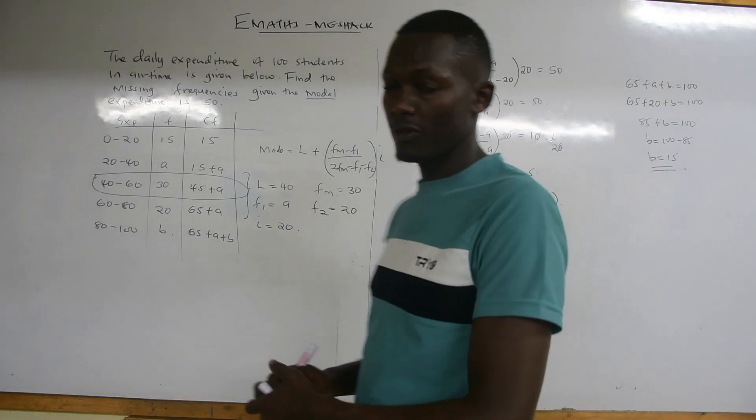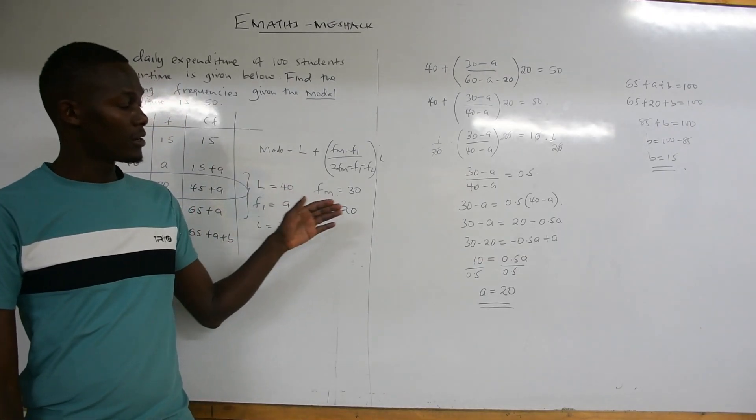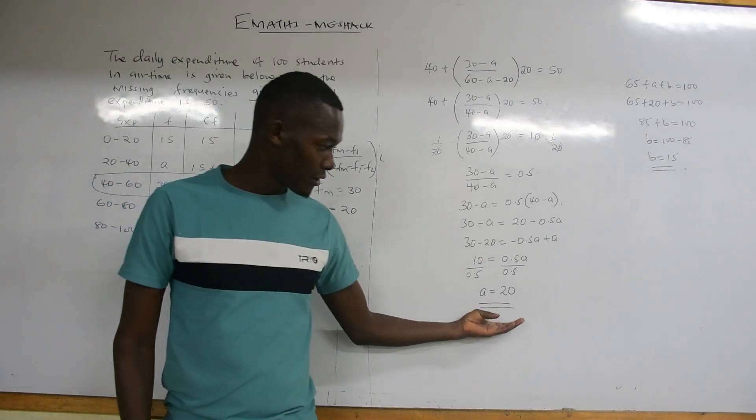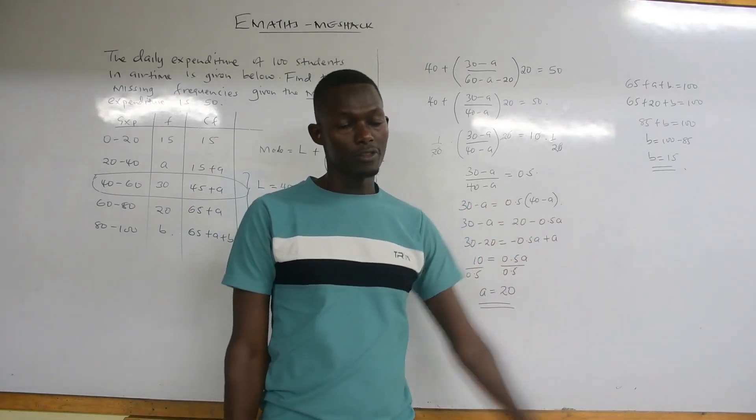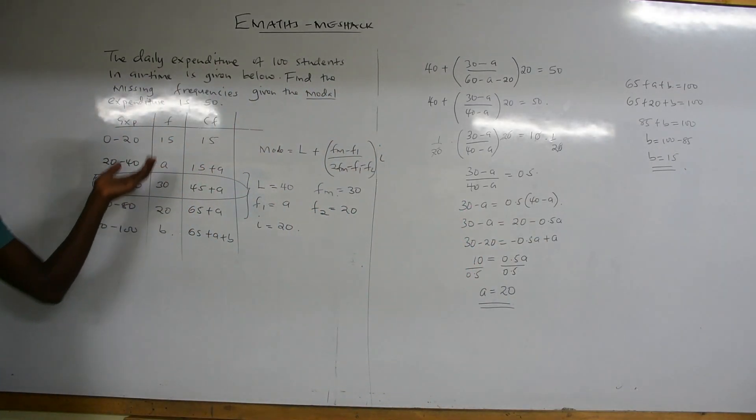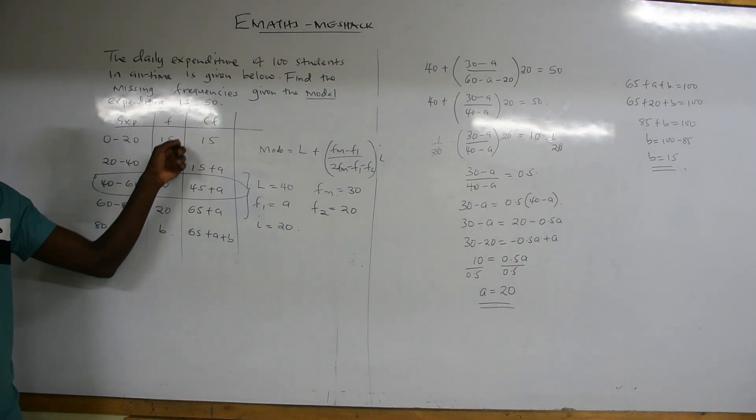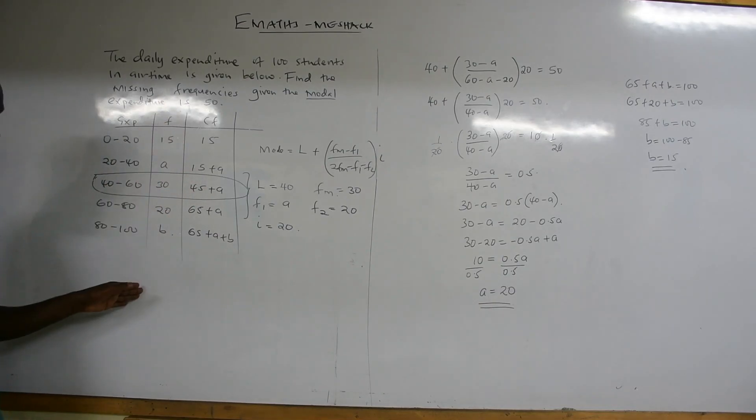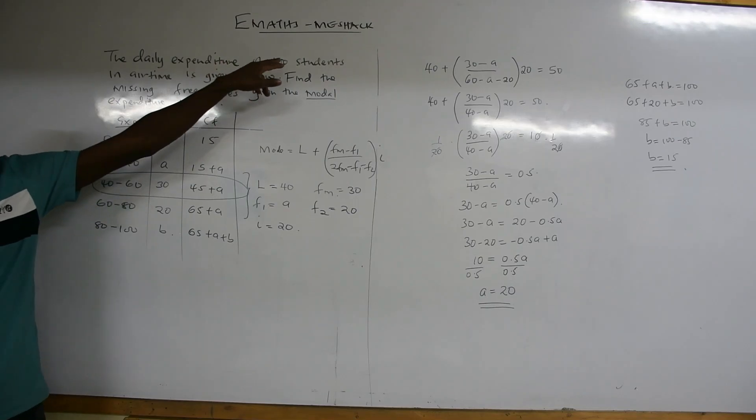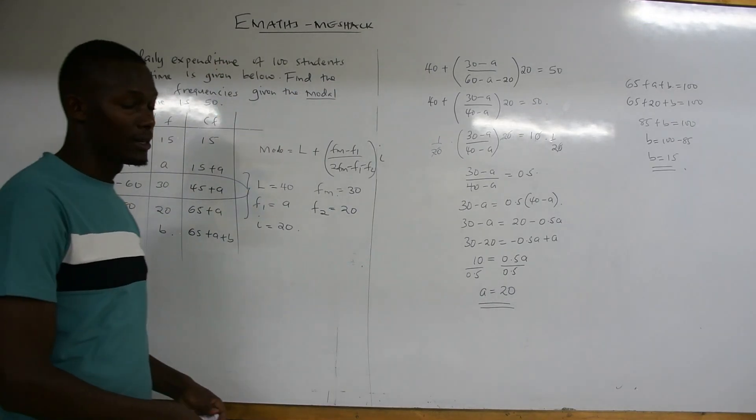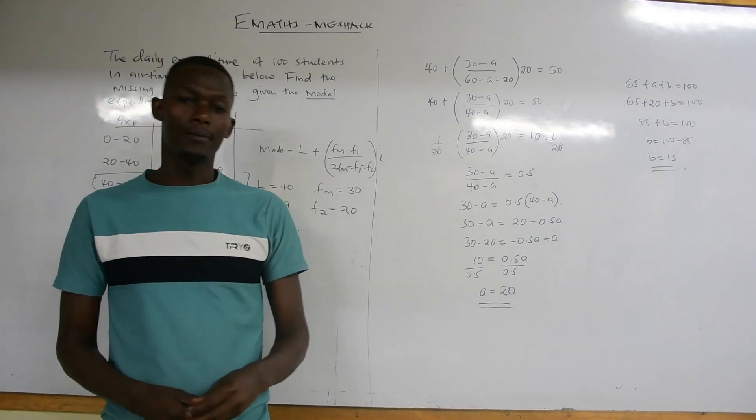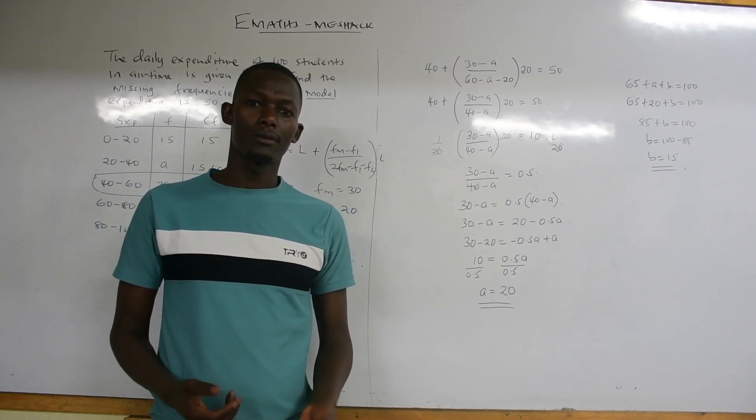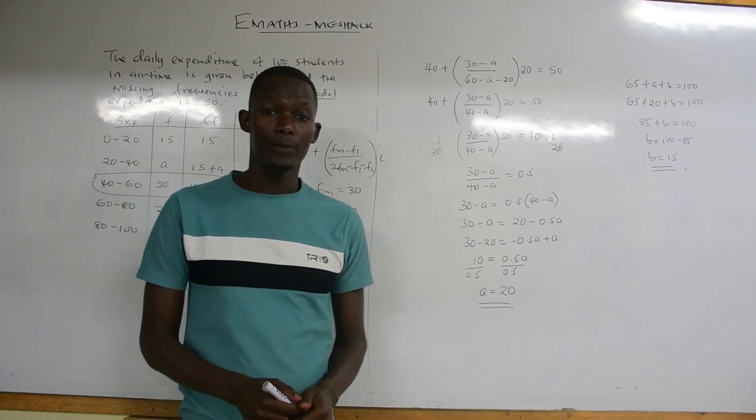That is how you find your missing values when you are given the mode. Your A value will be 20 and your B value will be 15. You can replace the values to verify: 15 plus 20 plus 30 plus 20 plus 15 gives you 100. That is it for statistics. See you in the next class. If you have not subscribed, please subscribe, share, and also comment.